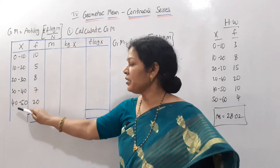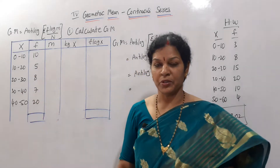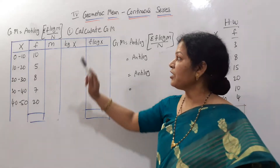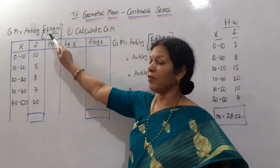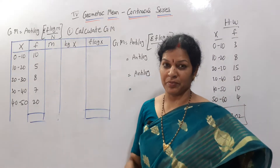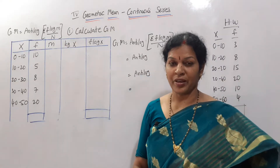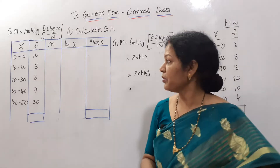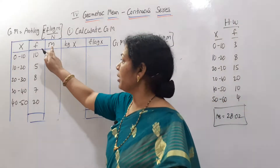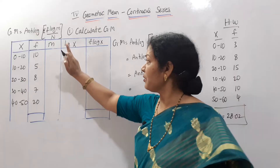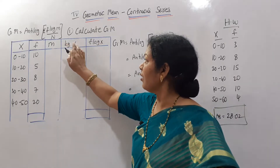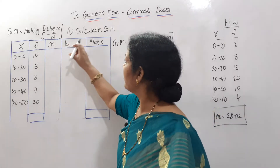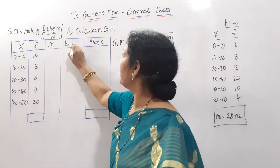The class intervals are 0 to 10, 10 to 20, up to 40 to 50, and frequency is also given. As per the formula, we need log m. First we take the mid value — m means mid value. Then we calculate log m, not x. Then frequency into log m. These are the columns we require.